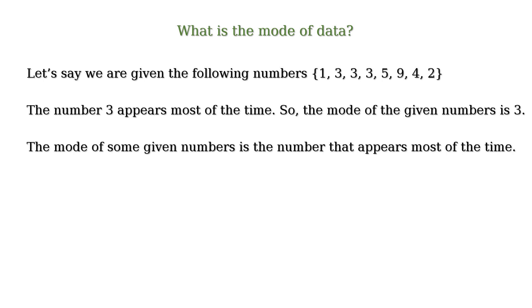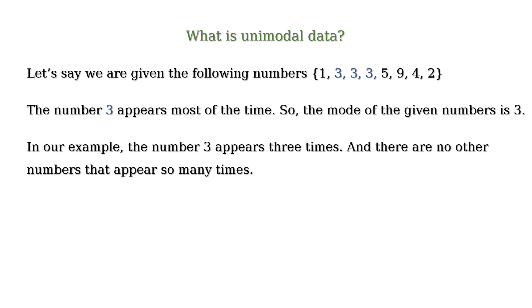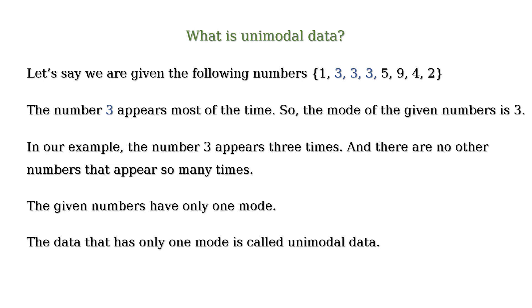Here in our example, the number 3 appears 3 times and there are no other numbers that appear so many times. So the given numbers have only one mode and thus the given data is unimodal. In other words, if a given data has only one mode, the data is called unimodal data.